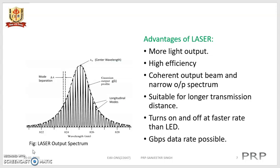The diagram on the left shows the laser output spectrum, which produces a very narrow output. Advantages of laser: it produces more light output and has higher efficiency; the light produced is a coherent output beam with a narrow output spectrum. It is suitable for longer transmission distances. It turns on and off at a faster rate than the LED, and the data rate possible could be in gigabits per second.